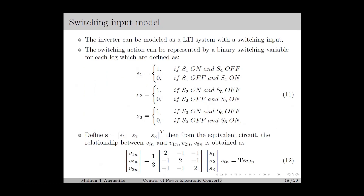Next, we move on to the switching input model of the inverter, in which we use a binary switching variable for each leg to represent the switching action, defined as in equation number 11. Using the switching variables, the phase voltages V1n, V2n, and V3n can be represented in terms of the input voltage Vin as in equation number 12. For mode 1, S4, S5, and S3 are on, so S1 equals 0, S2 equals 0, and S3 equals 1, giving the switching vector 001, which is the binary equivalent of 1. For mode 2, S4, S2, and S6 are on, giving S1 equal to 0, S2 equal to 1, and S3 equal to 0, and the switching vector becomes 010, which is the binary equivalent of 2. This holds up to mode 6. Naming the modes this way helps in remembering the switching pattern.